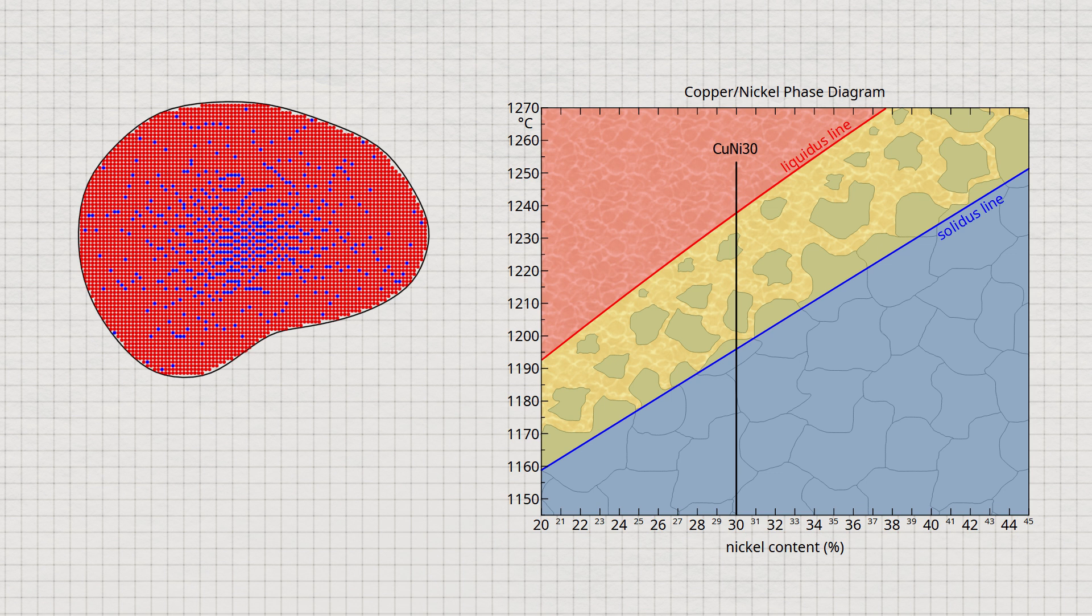In principle, segregation could be avoided by sufficiently slow cooling, as the resulting differences in concentration can always be equalized by diffusion processes.